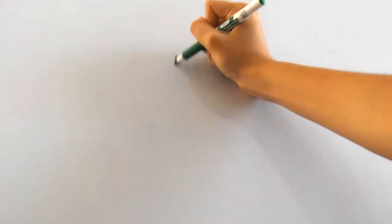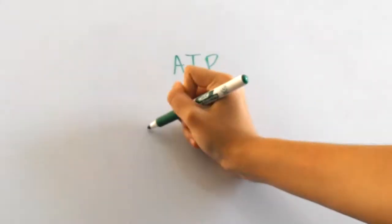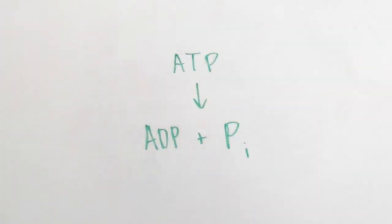When ATP is used, it basically breaks into a single phosphate group and ADP. ADP is adenosine diphosphate and the di part means that there are now two phosphate groups.